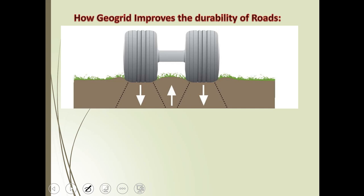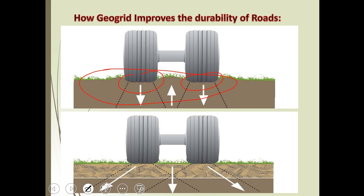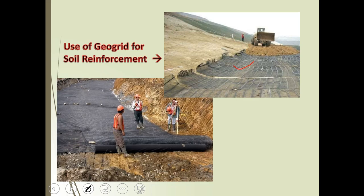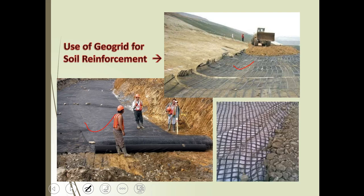Geogrids improve the durability of roads. When a moving load such as a wheel load is applied, there is deformation of the pavement. But if geogrids are placed in the pavement in this pattern, the moving load is equally distributed through the pavement. This is the benefit we get after using geogrids as reinforcement.